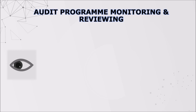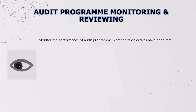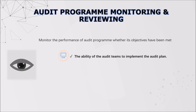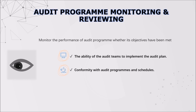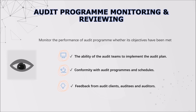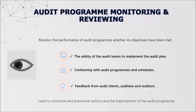The final step of procedures is monitoring and reviewing the audit programs. We must ensure our objectives have been fulfilled and our money haven't been wasted. Therefore, we provide three different standards to monitor and review our audit programs. Firstly, we check whether our audit teams have the ability to implement the audit plan. Secondly, we check whether our program is in conformity with our schedules. Thirdly, we check the feedback from audit clients, auditees, and auditors. All these standards lead to corrective and preventive actions and the resultant improvement of the audit program.